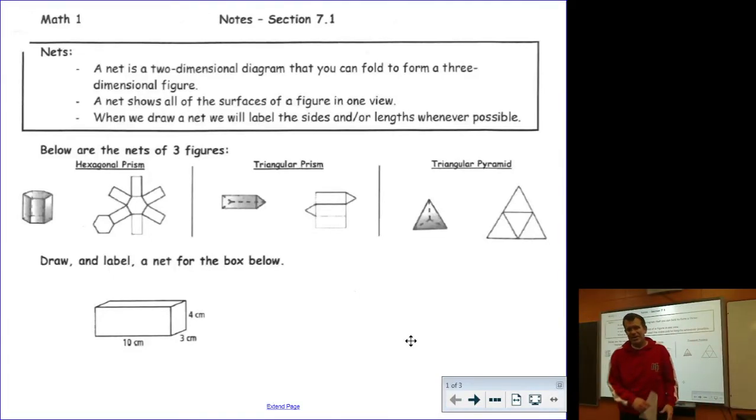All right guys, we are starting Chapter 7. Chapter 7 is where we start the geometry portion of Math 1. We are pretty much finished with the algebra portion, though we will go back and review somewhat significantly. But from this point on, each chapter covers some topic in geometry. Starting Chapter 7, we are going to be doing some drawings of three-dimensional figures.